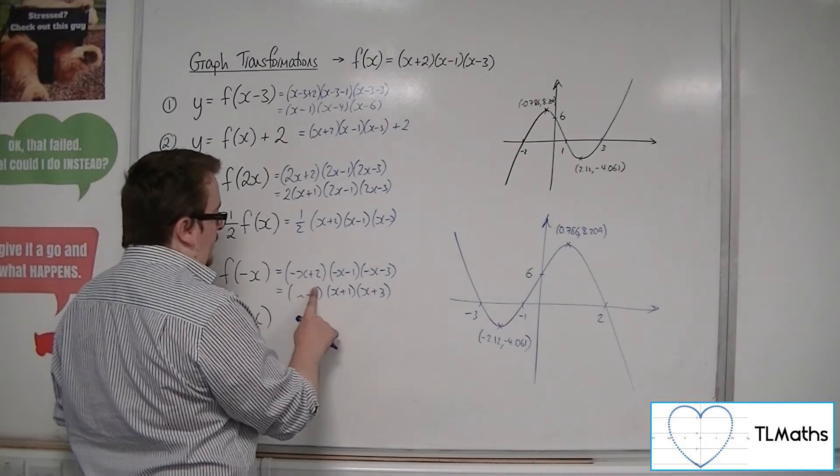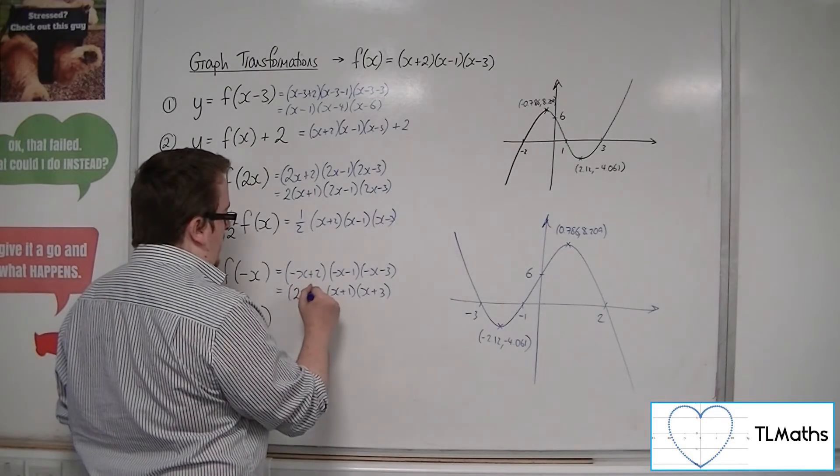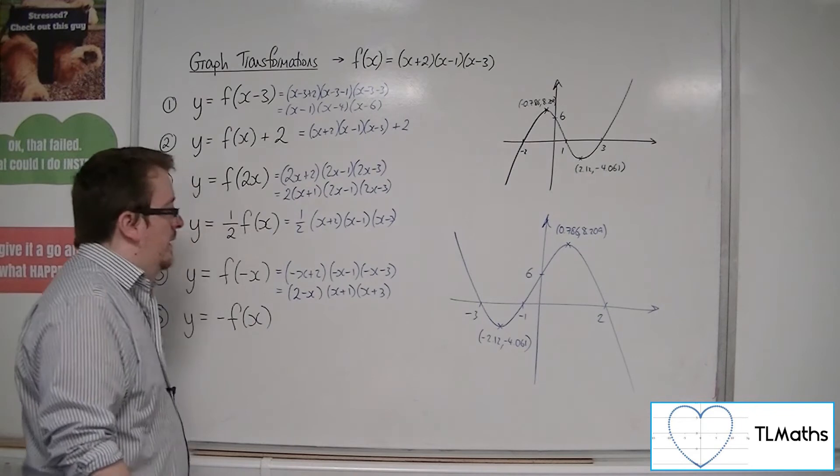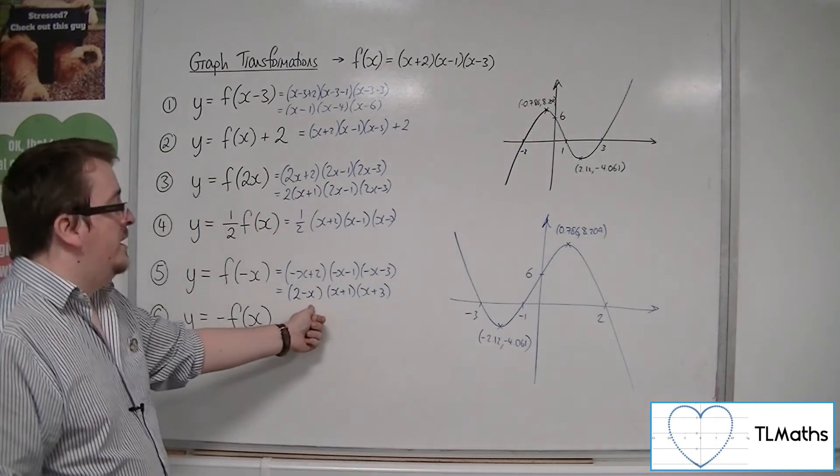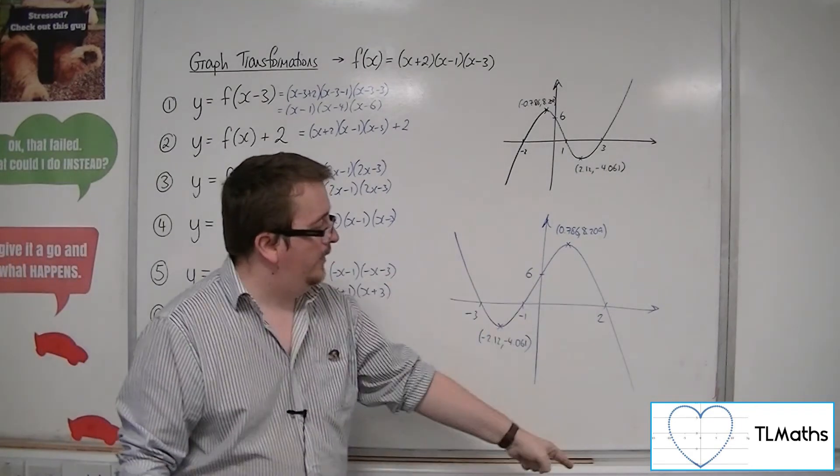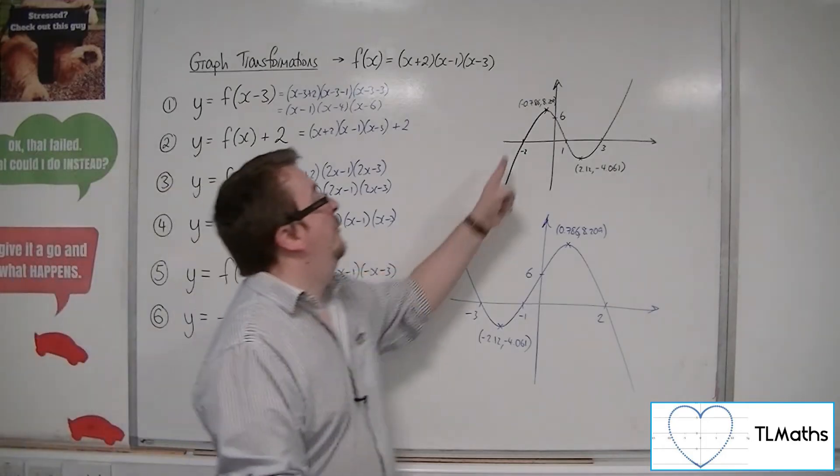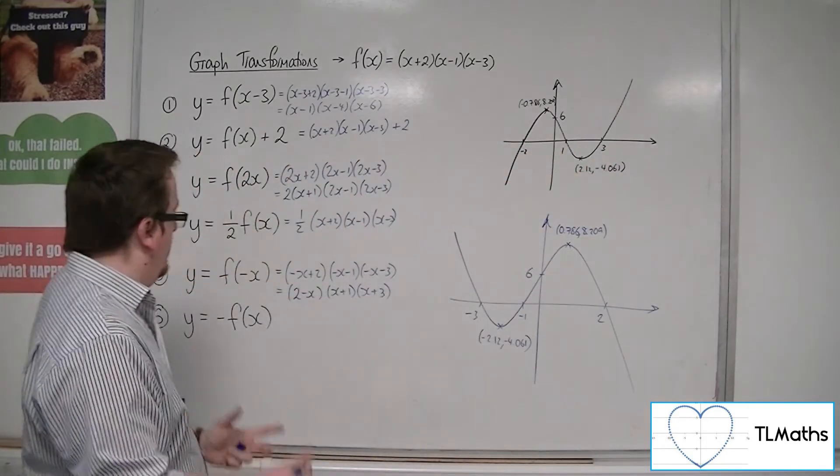Now, you could rewrite that as (2-x). That's probably how I would write it. And it highlights the fact that you're going to get a -x³, and hence this shape, as opposed to that one.